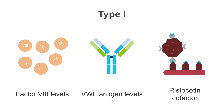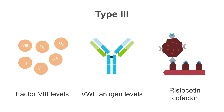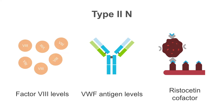Type 1 von Willebrand's disease is a mild abnormality — there is mild deficiency of all three levels tested. In type 3 there is severe deficiency of all three factors. In type 2, results vary according to the subtype.